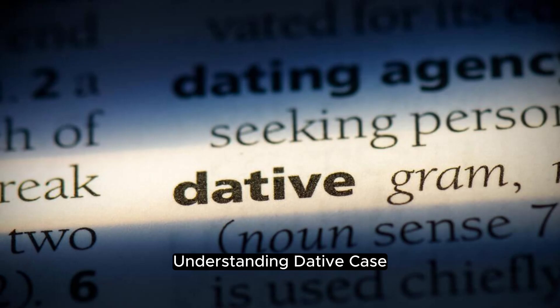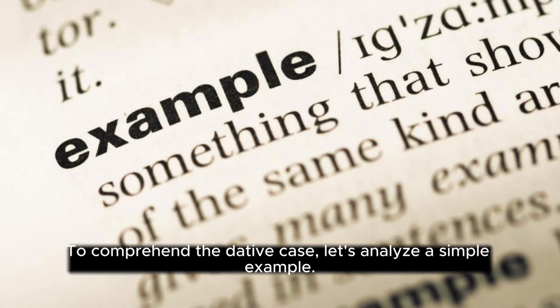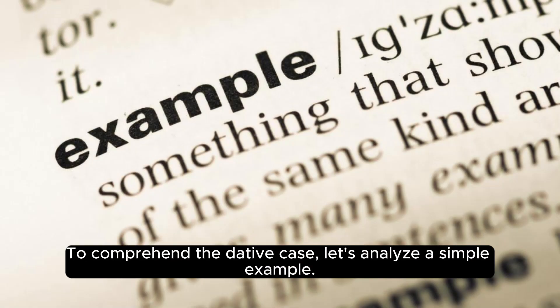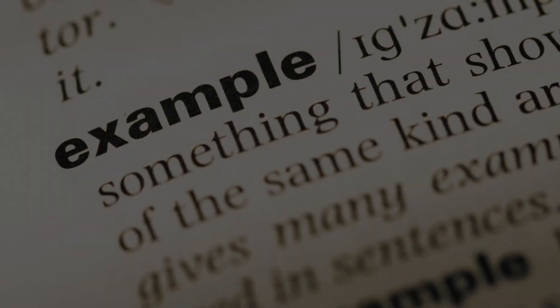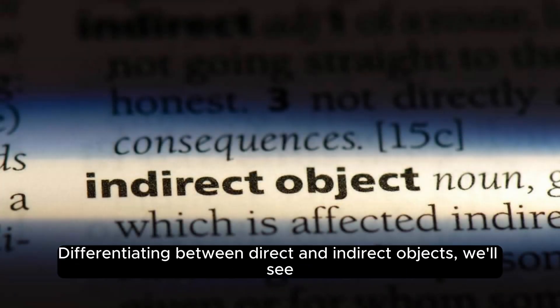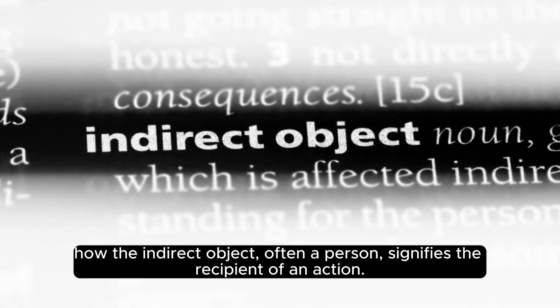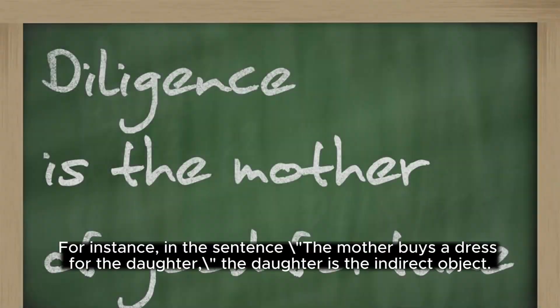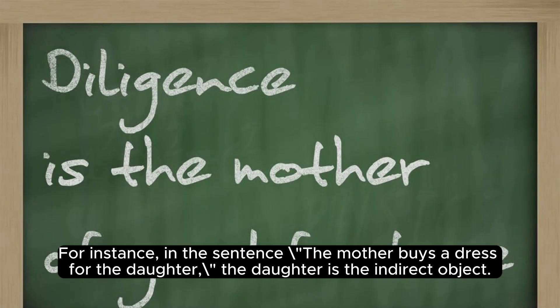To comprehend the dative case, let's analyze a simple example. Differentiating between direct and indirect objects, we'll see how the indirect object — often a person — signifies the recipient of an action. For instance, in the sentence 'the mother buys a dress for the daughter,' the daughter is the indirect object.